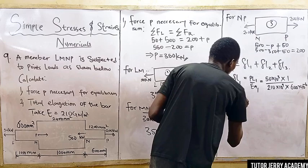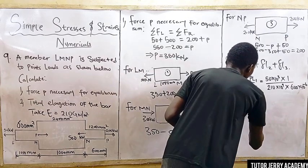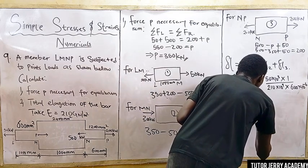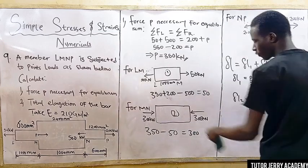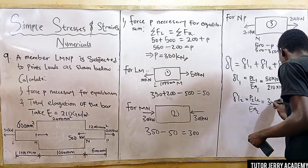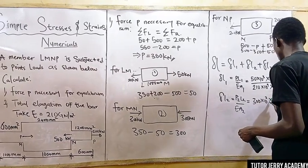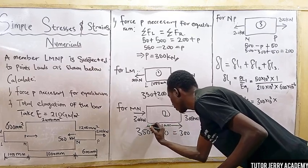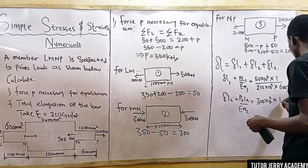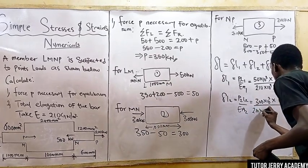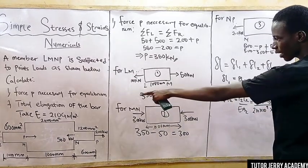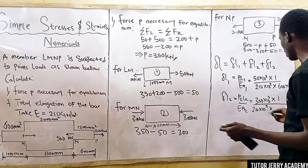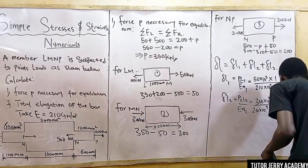For section two, elongation equals P2·L2 over E·A2. The force for section two is 300 kilonewtons, which is 300 × 10³ N. The length is 1000 millimeters, converting to 1 meter. E is 210 × 10⁹. The area is 2400 millimeters squared, converting to meters squared gives 2400 × 10⁻⁶.